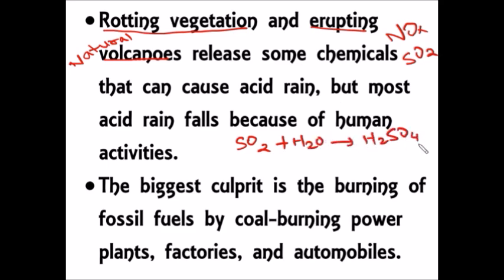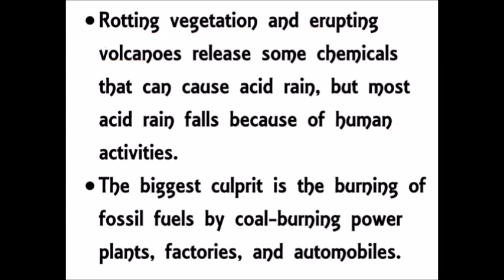The major reason for acid rain is human activities. Within human activity, the burning of fossil fuels by coal-burning power plants, factories, and automobiles are the big culprits.